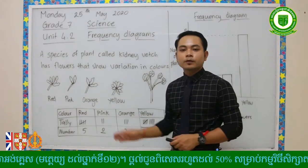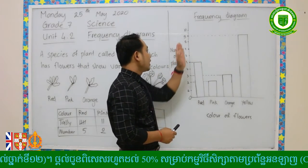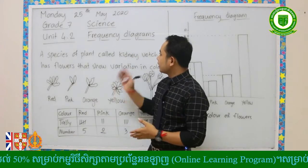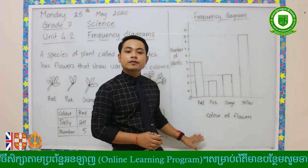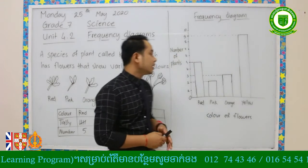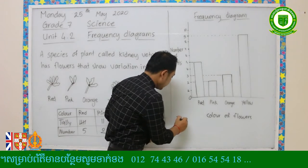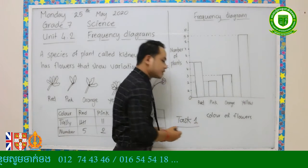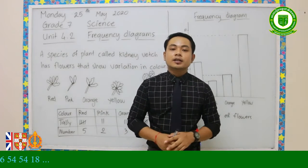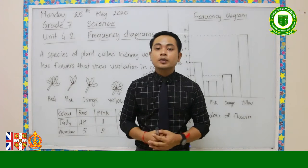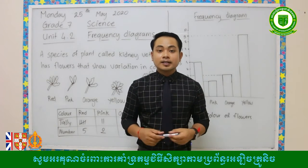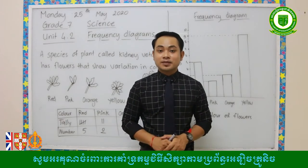Remember: when you want to show the variation in colors in one species, draw the recording table first and then draw the frequency diagram. This video is all about frequency diagrams. I'll upload Task 1 for you to practice recording results and drawing the frequency diagram. After watching this video, copy down the lesson into your notebook, then complete the task that will be uploaded in the Telegram group. Take a picture and send it to my personal Telegram. Enjoy Task 1 — see you in the second episode.